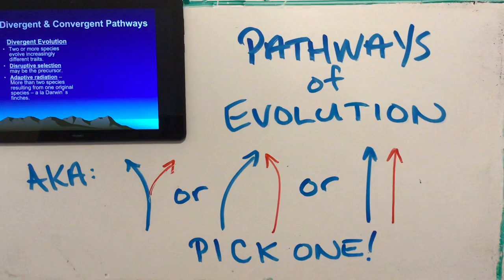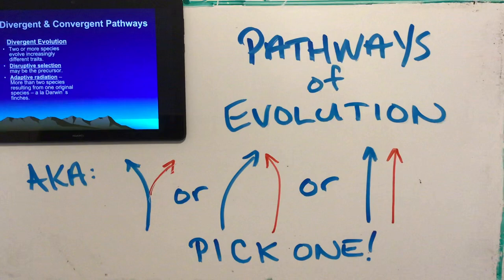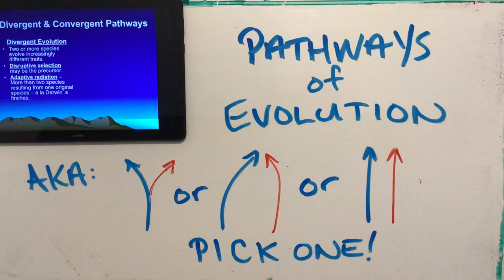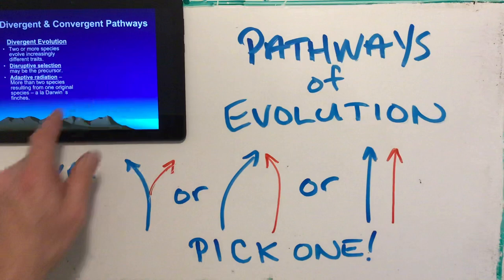Another phenomenon is adaptive radiation. This happened with Darwin's finches, where one species of finch came over to the Galapagos Islands from South America and gave rise to many different finch species. In Darwin's Dangerous Idea, the bird expert Gould tells Darwin these aren't grosbeaks and wrens — they're all finches from that one ancestral finch that got blown over to the islands. Adaptive radiation is an example of divergent evolution.